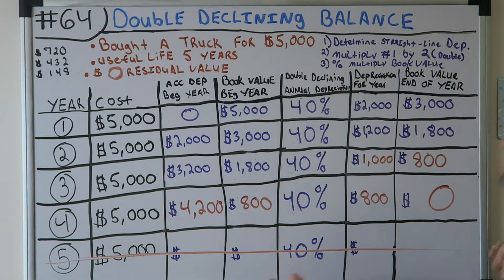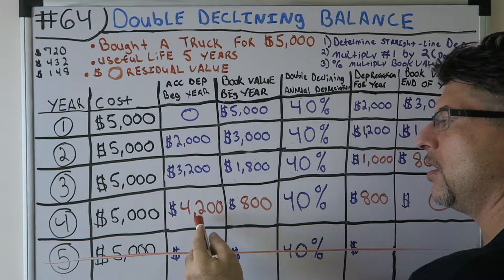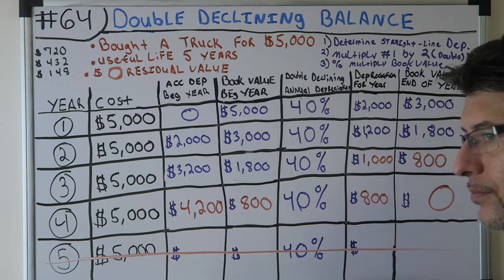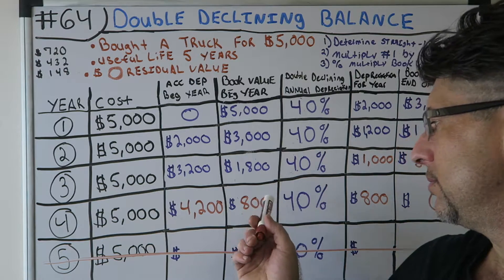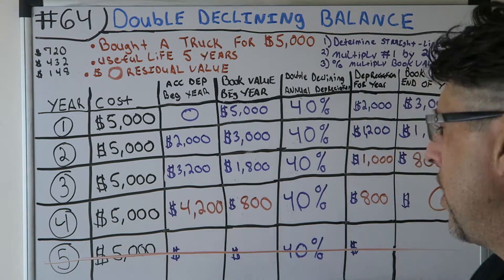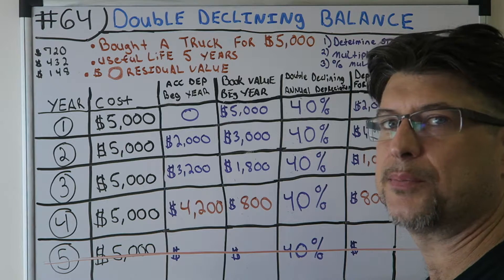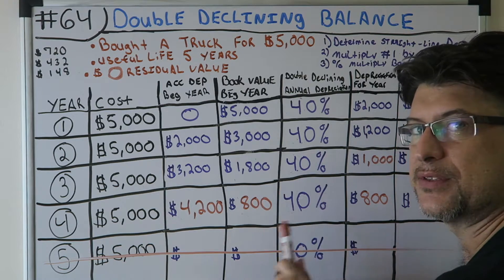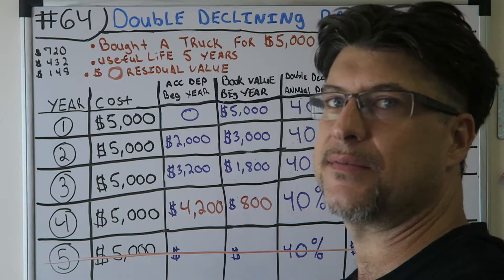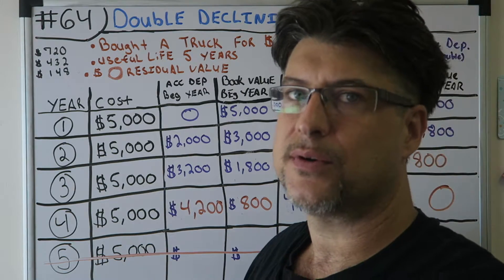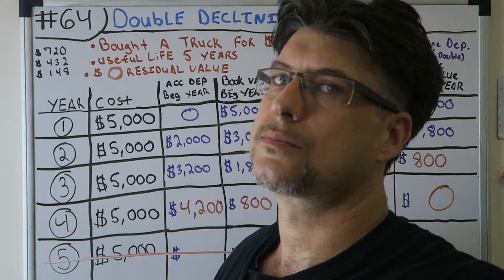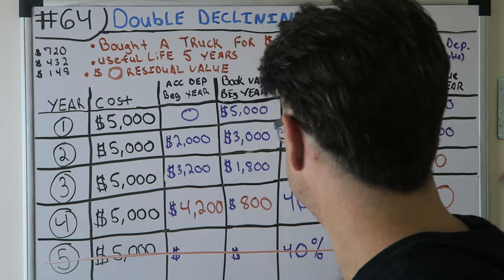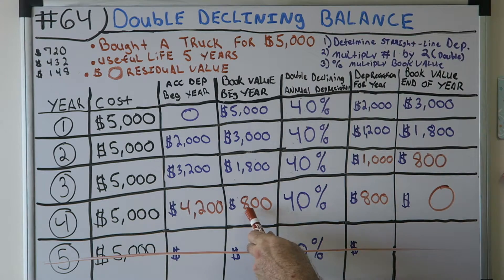That leaves us with eight hundred dollars book value at the end of year three. Coming to year four, accumulated depreciation is forty-two hundred, book value at the beginning of year four is eight hundred. Forty percent of that would be around three hundred twenty dollars, and it would go on forever — you just take a percentage of whatever the value is and multiply by the percentage. You're never going to get to zero because you're always just multiplying by a percentage.